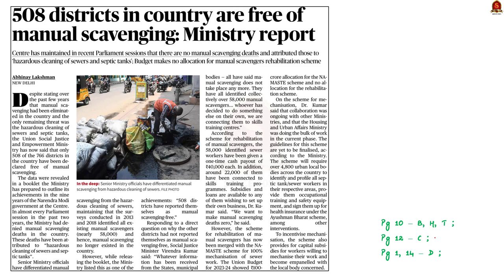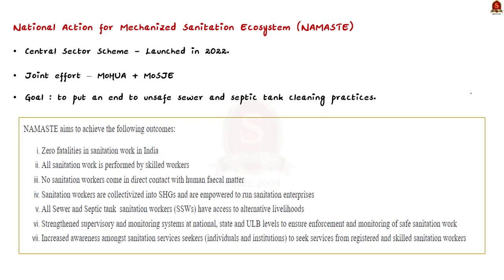Look at this news article. The Union Social Justice and Empowerment Ministry has admitted that only 508 out of 766 districts in India are free of manual scavenging. This seems to be contradicting with the previous claims made by the government. It also says that the ministry's rehabilitation scheme for manual scavengers has merged with the Namaste scheme for sewer mechanization. Namaste stands for National Action for Mechanized Sanitation Ecosystem. It is an initiative to ensure the safety of sanitation workers. The scheme was launched in 2022 as a central sector scheme, and it is a joint effort by the Ministry of Housing and Urban Affairs and the Ministry of Social Justice and Empowerment. The main goal is to put an end to unsafe sewer and septic tank cleaning practices.